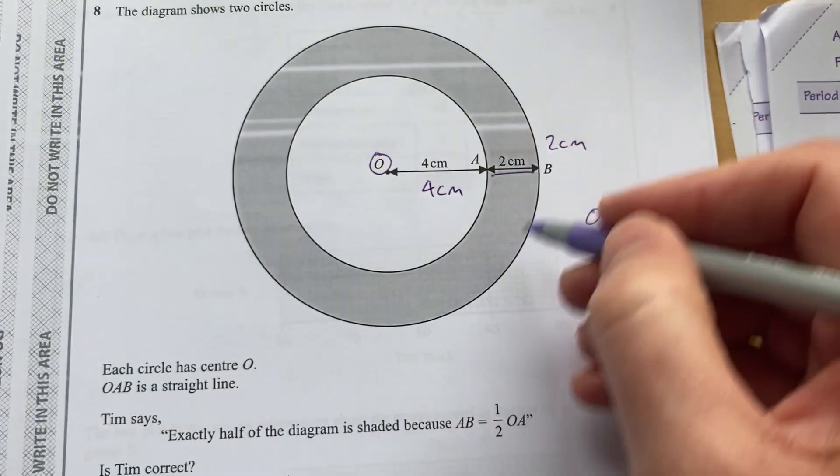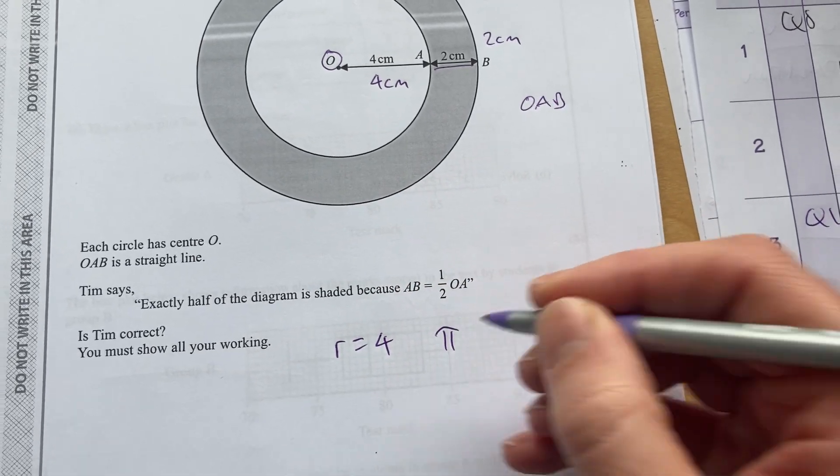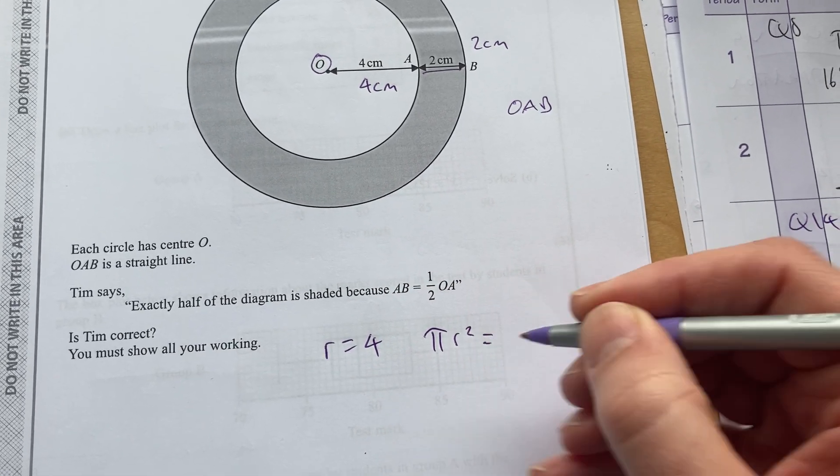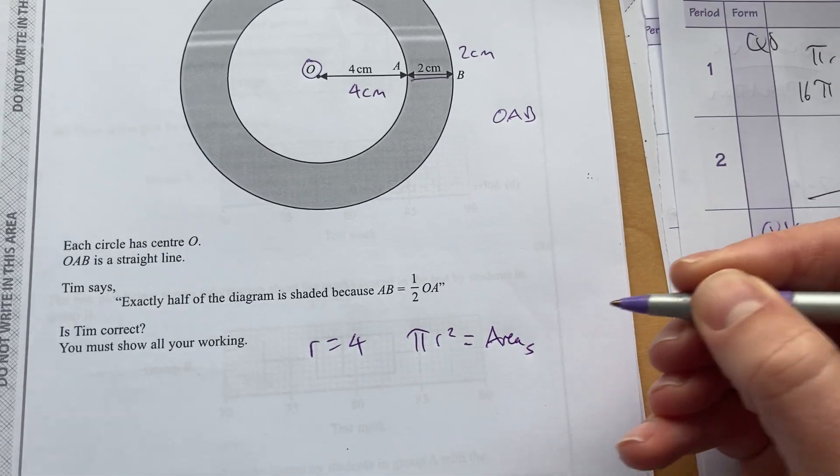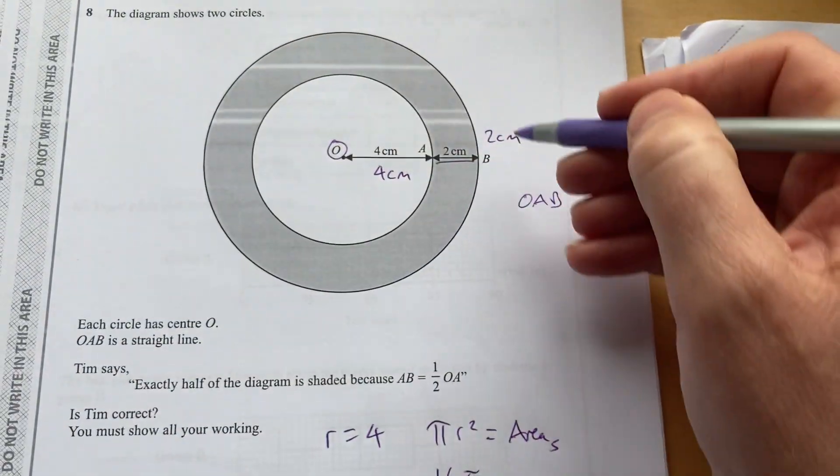Let's use the smaller circle. Now the radius is four. So pi R squared will be area of the smaller one. So it'll be 16 pi. Now let's compare it to the larger one.